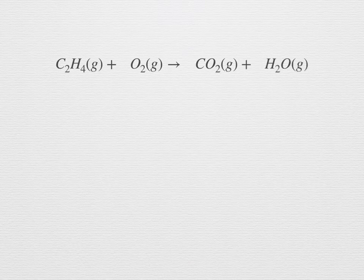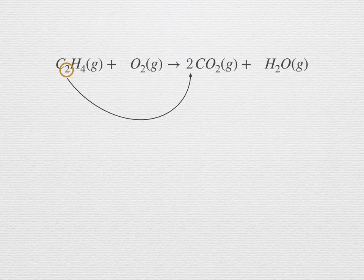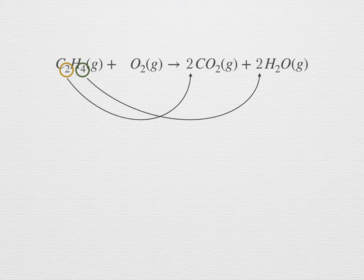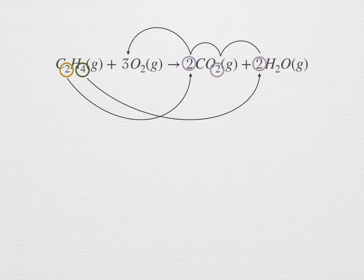For example, ethylene burns in oxygen and is converted to carbon dioxide and water. By inspection we see two carbon atoms in ethylene, so there must be at least two molecules of carbon dioxide. Also there are four atoms of hydrogen in ethylene, so there must be at least two molecules of water. Counting up the oxygen atoms on the product side, we get four from CO₂ and another two from water for a total of six, meaning we must have three molecules of O₂. Now actually, this is a redox equation, but it is simple enough to balance by inspection.